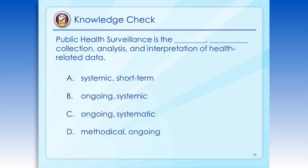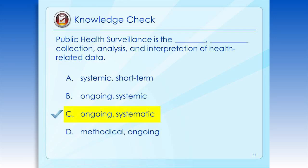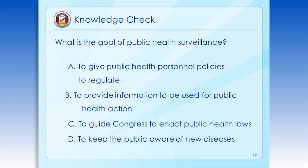Okay, let's do a quick knowledge check. Which of the four choices is most correct — A, B, C, or D? If you pick C, you're correct: public health surveillance is the ongoing systematic collection, analysis, and interpretation of health-related data. I have another knowledge check question: what's the goal of public health surveillance? The correct answer here is B — to provide information to be used for public health action.